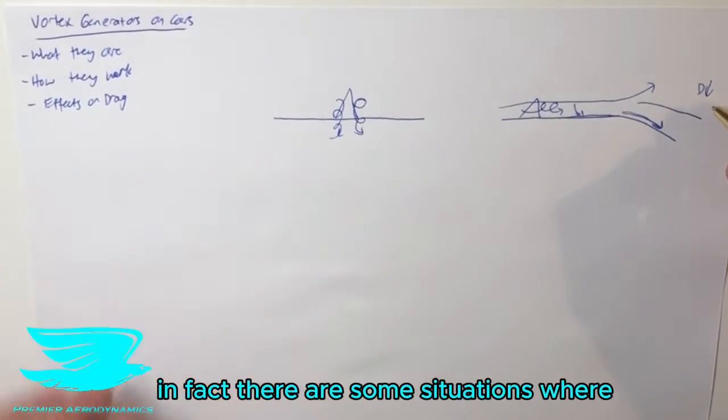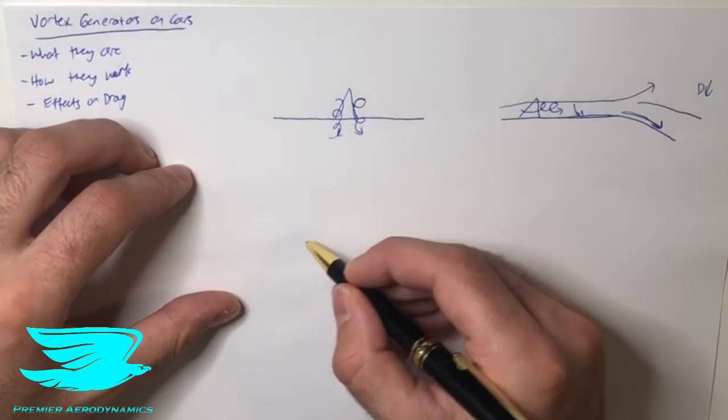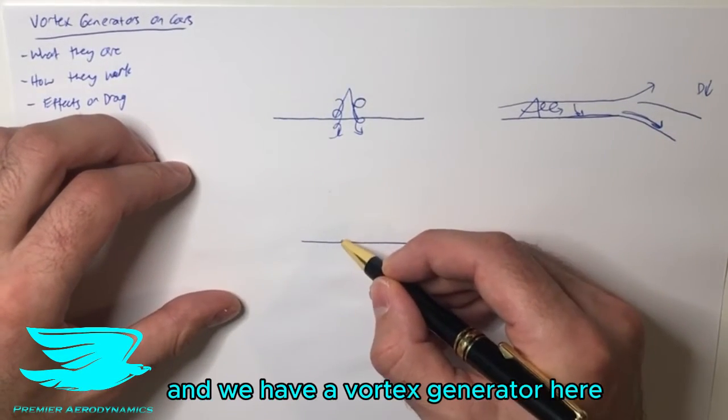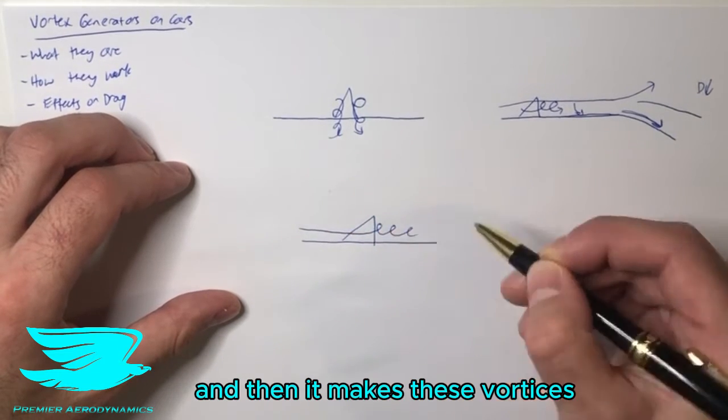In fact, there are some situations where vortex generators are actually bad. So let's say we have a surface and we have a vortex generator here. Well, the flow's coming here, and it's hitting it, and then it makes these vortices.